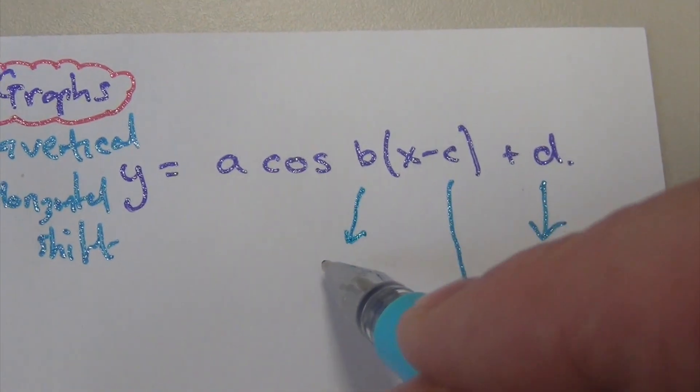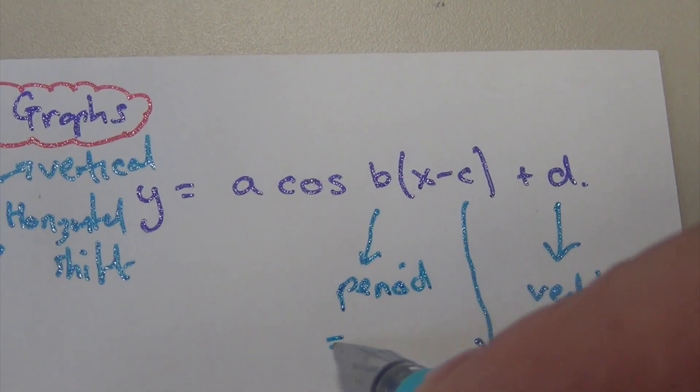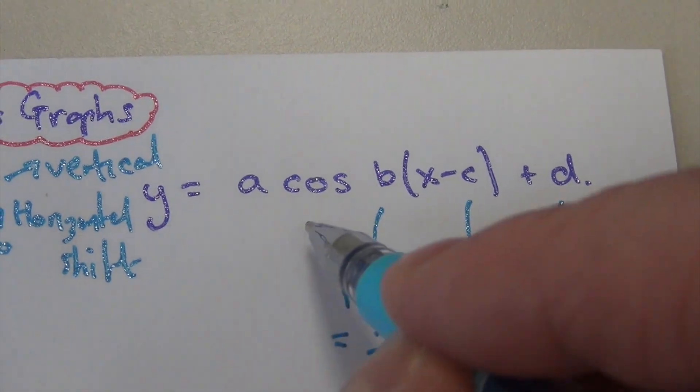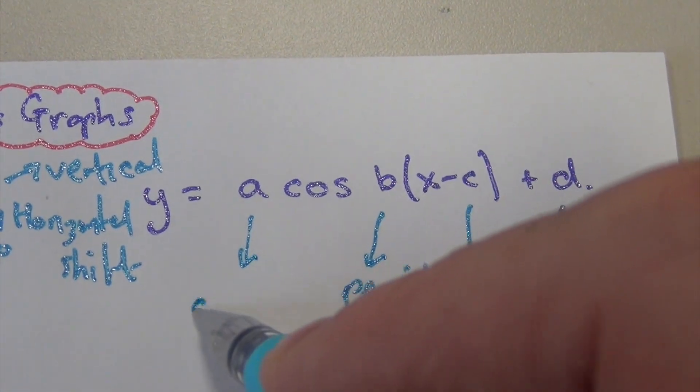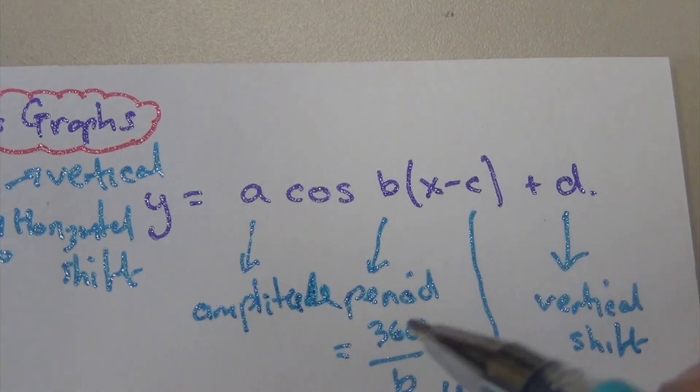The B helps us find the period. We know that period equals 360 degrees divided by the B. And the A is, of course, the amplitude. The number in front is the amplitude. How far up and down it goes.